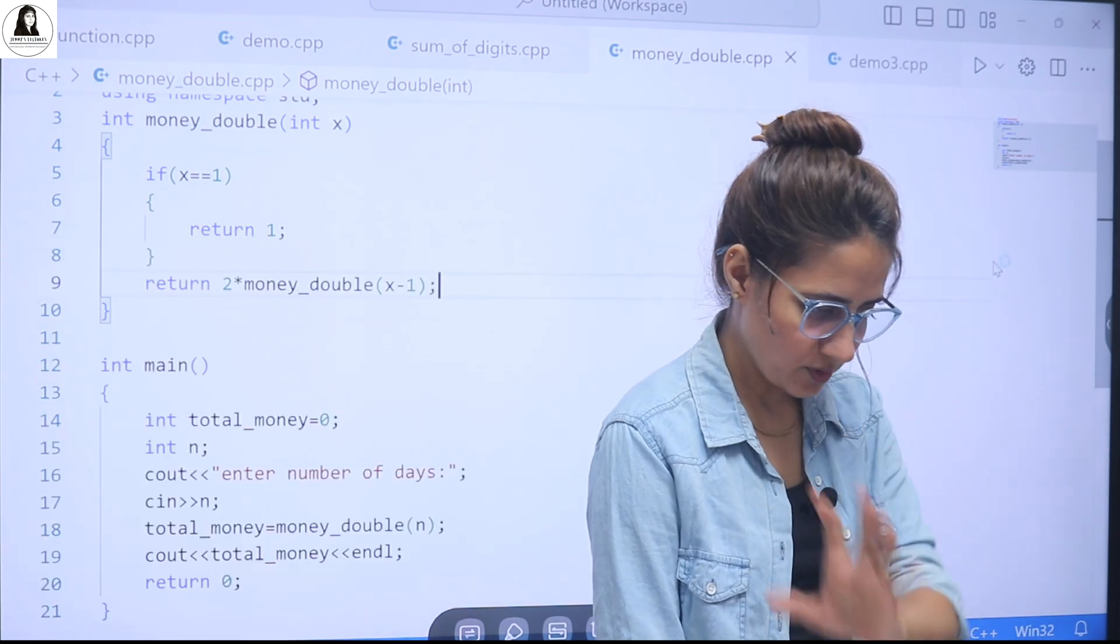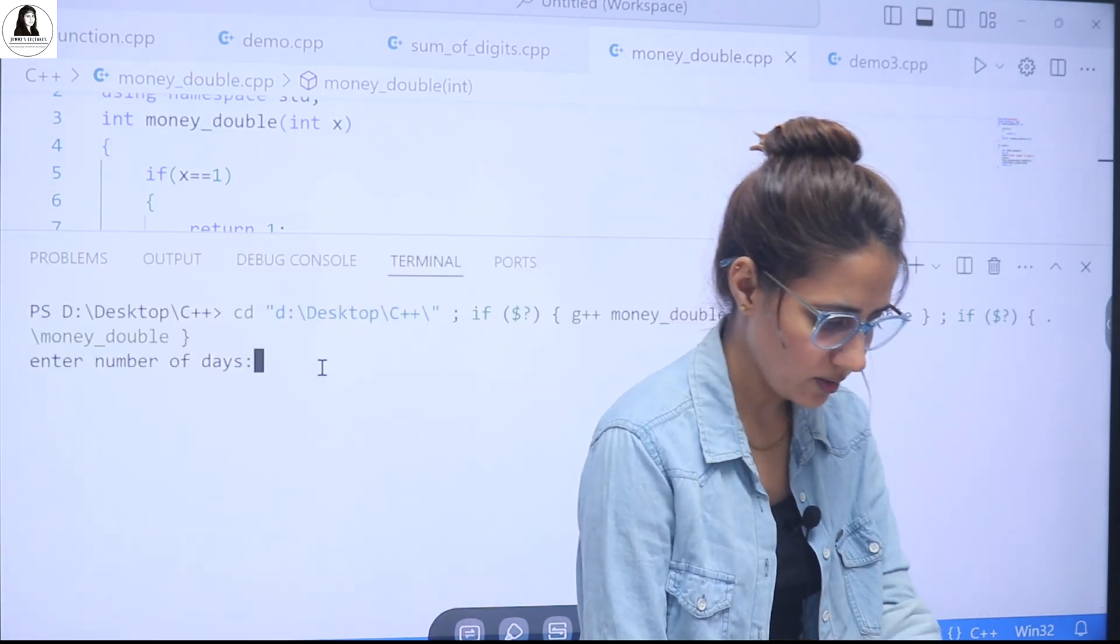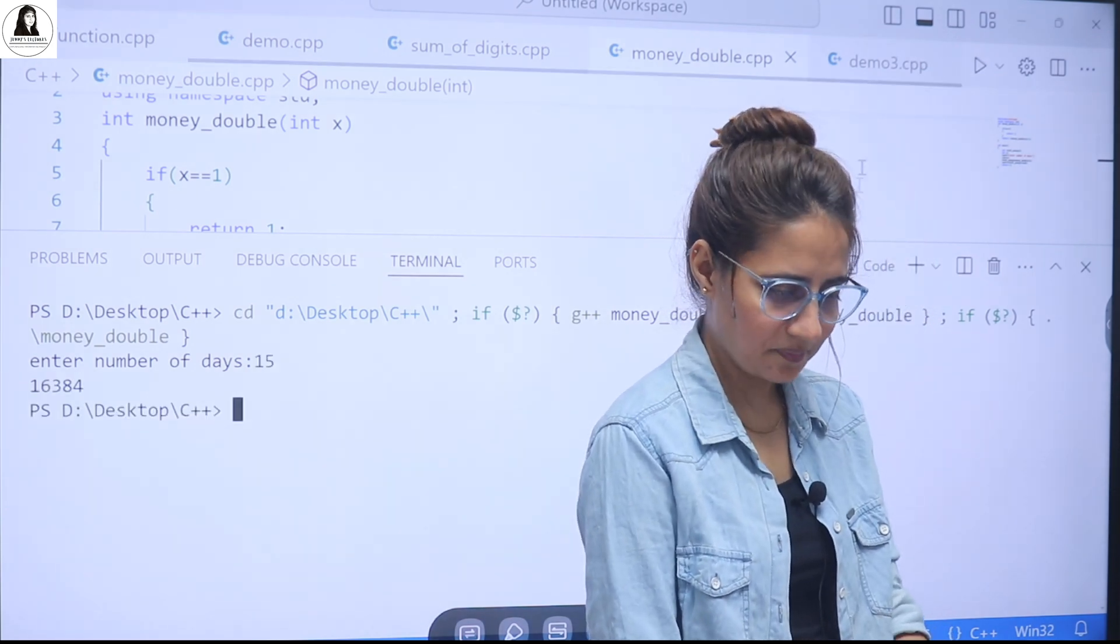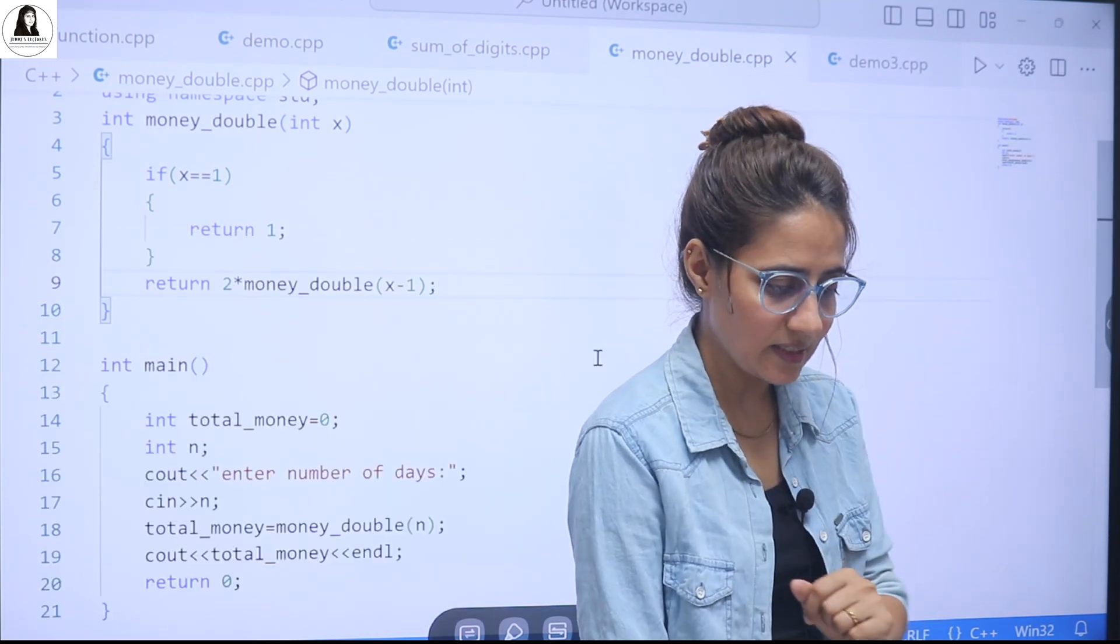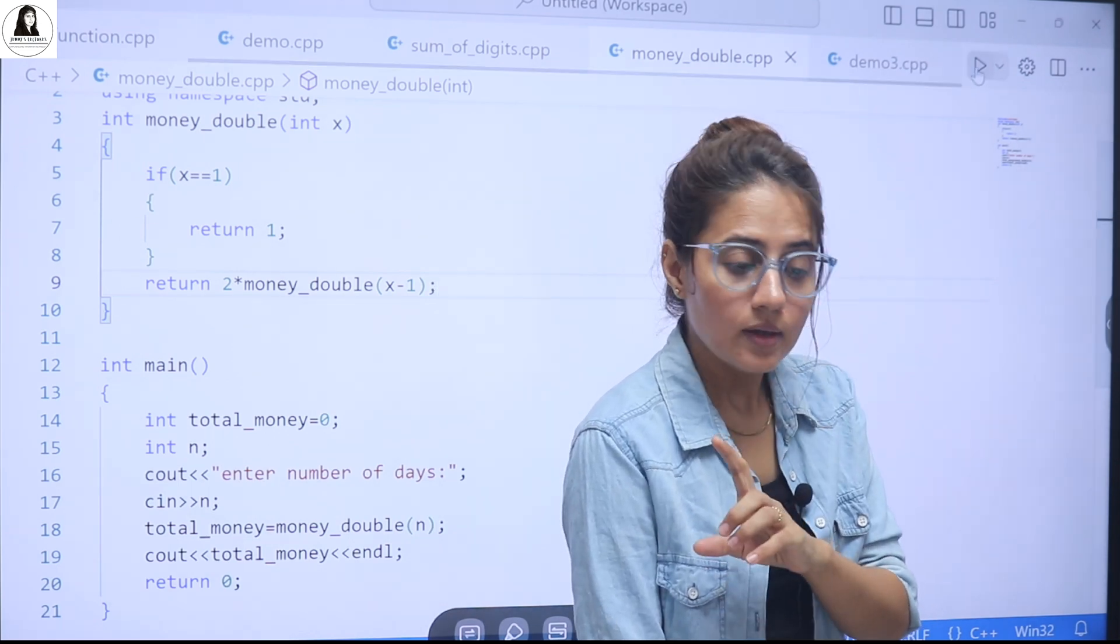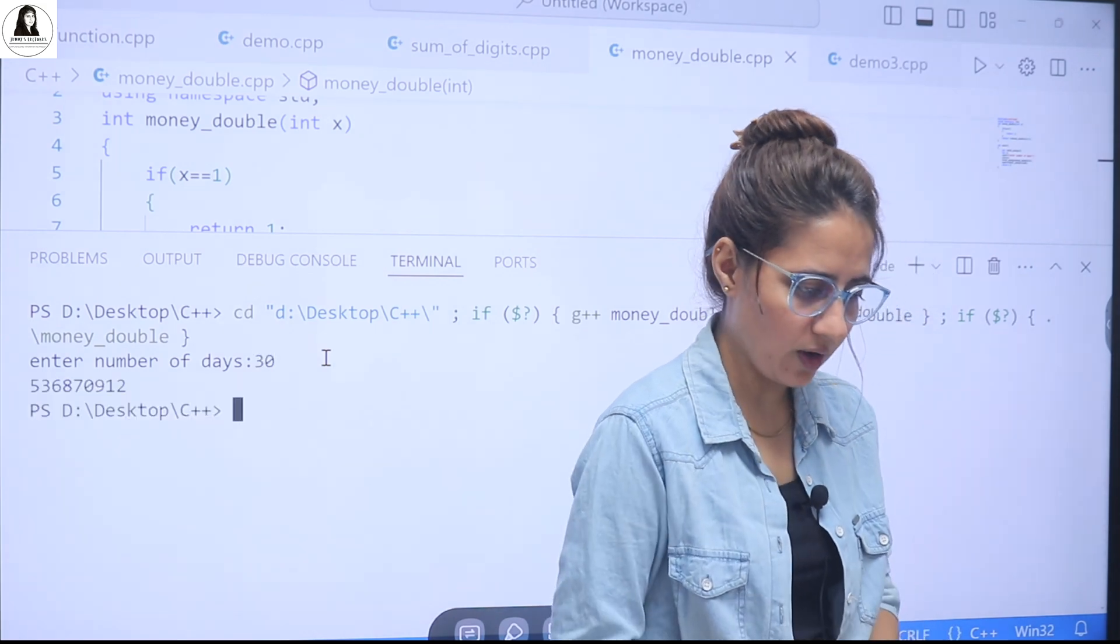If I run this again, suppose. If I run this. Now, see. You see here. After 15 days, you will have this much money. After 30 days. See, after 15 days, you have only 16,000 rupees only. Let's see after 30 days. What do you think? How much money you will have? See.